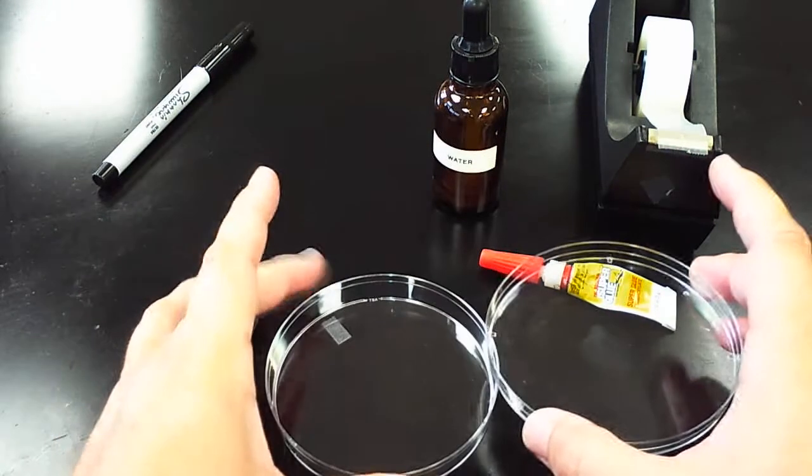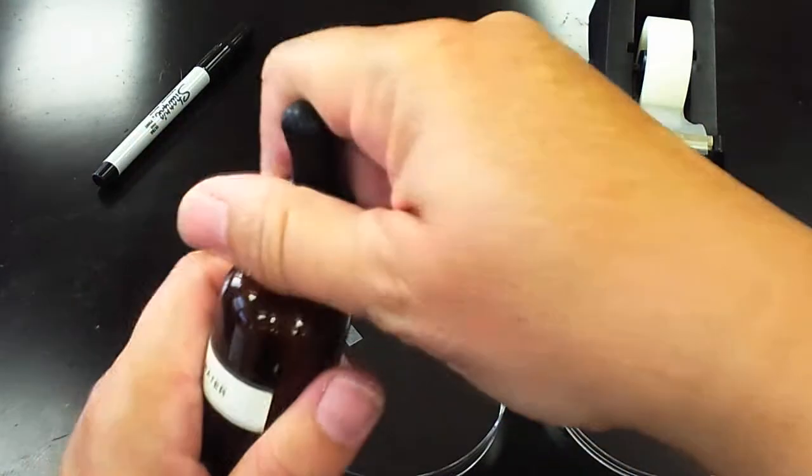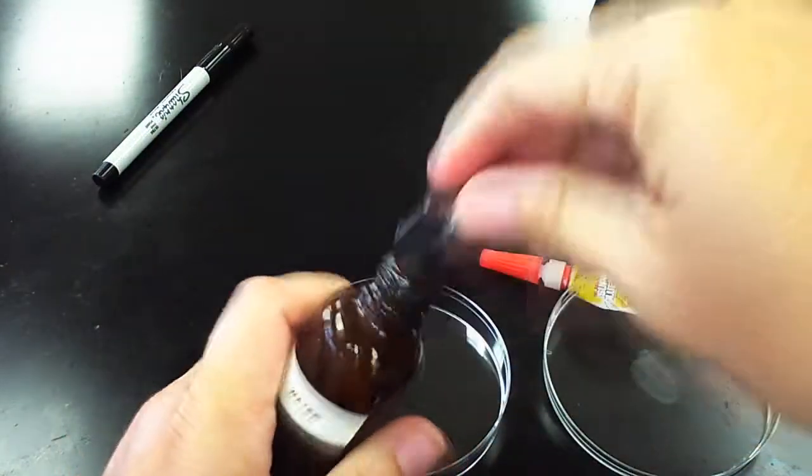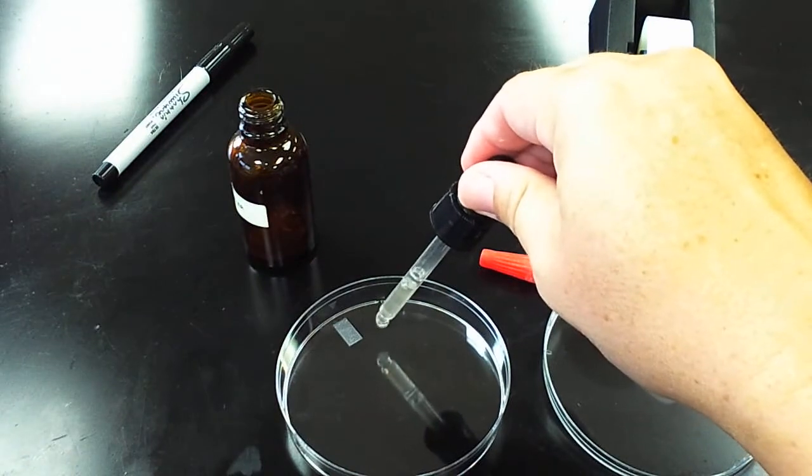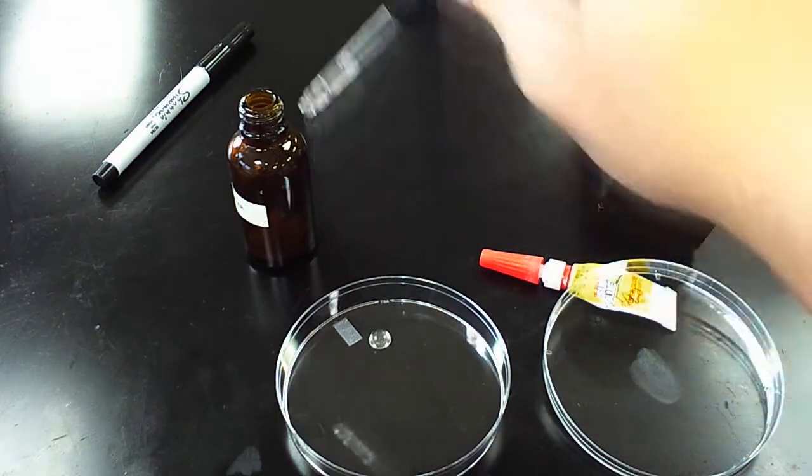In the bottom of the petri dish, on one side you're going to place a couple drops of water, just two really.